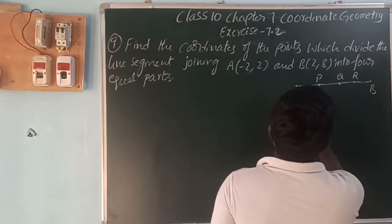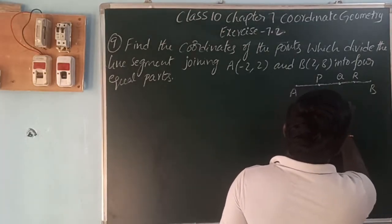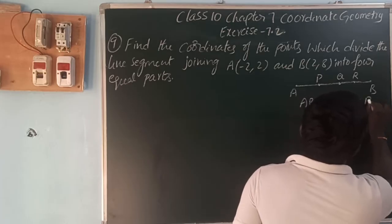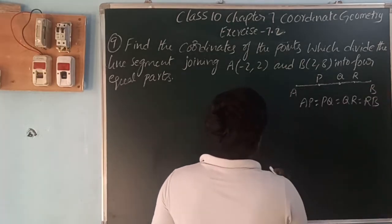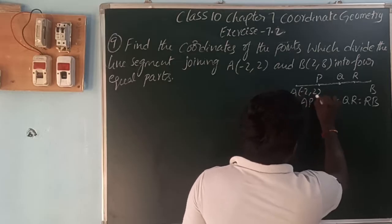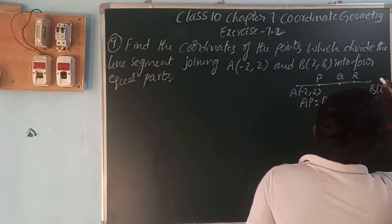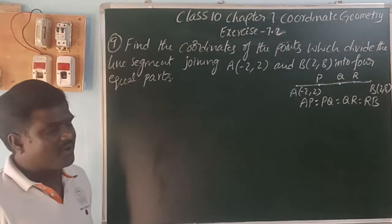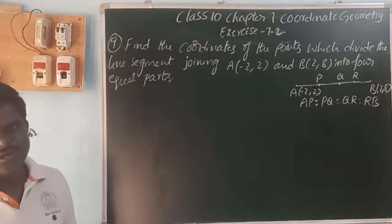AP is equal to PQ is equal to QR is equal to RB. Here, A point is (-2, 2) and B point is (2, 8). They are asking us to find the points P, Q, and R.